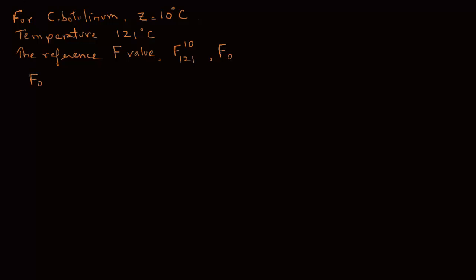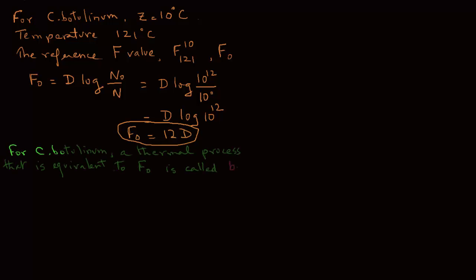Then F0 equals D times log of N0 over N. Now, N0 is the initial population and N is the final population. If we have 10 raised to power 12 spores in the beginning and one spore at the end, we have D times log of 10 raised to power 12 over 10 raised to power 0. And that gives us D times log 10 raised to power 12. Log of 10 raised to power 12 is 12. So F equals 12D. In commercial thermal processing, often a process is compared to the reference process of F0 equals 12D, and it's also called bot cook, where bot stands for botulinum.